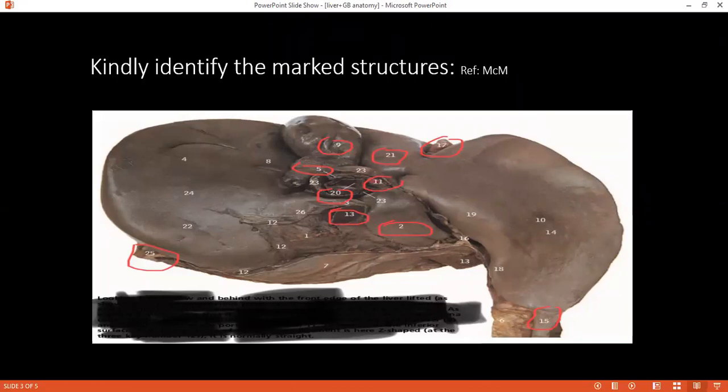Can you please identify the structures which are circled beginning from here, 25. This is right triangular ligament. What are these triangular ligaments? These are peritoneal folds which connect liver to the diaphragm and support liver. Very good.